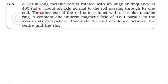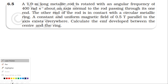From NCERT textbook, from the topic Electromagnetic Induction, question 6.5: A 1-meter long metallic rod is rotated with an angular frequency of 400 radians per second about an axis normal to the rod, passing through its own end. The other end of the rod is in contact with a circular metallic ring. A constant and uniform magnetic field of 0.5 tesla parallel to the axis exists everywhere. Calculate the EMF developed between the center and the ring.